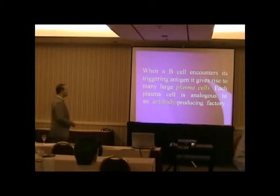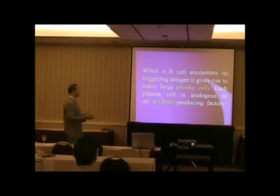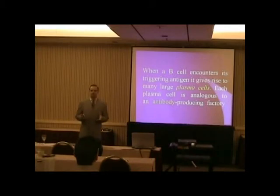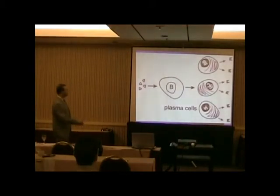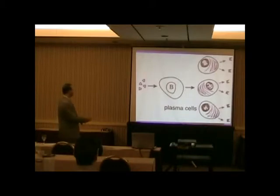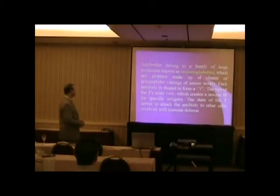When a B cell encounters its triggering antigen, it gives rise to many large plasma cells. A plasma cell is like an antibody-producing factory. The B cell makes plasma cells, and then the plasma cells start making all these antibodies — so it goes from B cell to plasma cell, and now we've got antibodies. The antigen is what triggers this response.